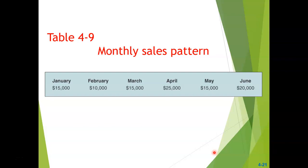To develop the cash budget, we start with a monthly sales pattern. For example: January fifteen thousand, February ten thousand, March fifteen thousand, April twenty-five thousand, May fifteen thousand, June twenty thousand. These can be developed from previous period information and adjusted for planned actions such as an increase in the marketing budget that might expand sales by ten percent per period.